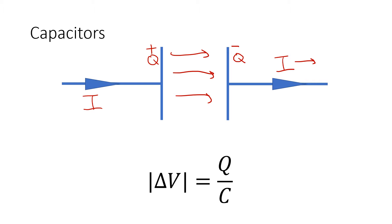So it builds up some positive charge on the left and some negative charge on the right. The behavior is that at first, because all the particles on the plates are neutral, the current will flow through just as if there's no resistance — like a resistanceless wire. But as charge builds up on the plates and there aren't enough neutral particles to push positive particles out, the current flow decreases. After a long time, once the plate charges up, it reaches a maximum charge and then no current flows through it anymore.